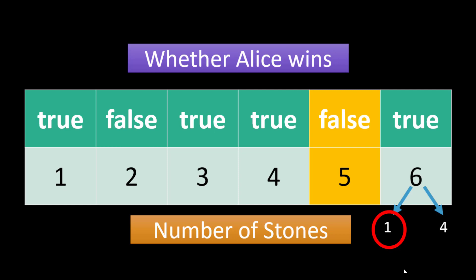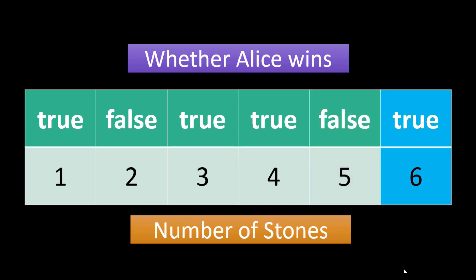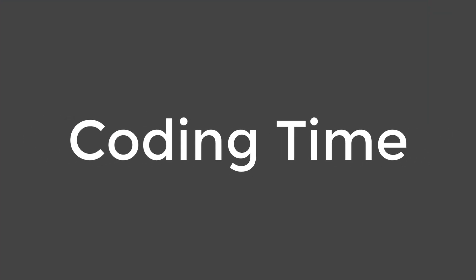Since the number of stones given to us was 6, we return the value at that particular index. In this problem, we are using the concept of dynamic programming. For any number of stones, we find all possible first moves Alice can make and then find out the answer for the remaining number of stones from Bob's side. This is all for the explanation part — try this problem on your own first, and if you have any doubts you can always come back to the video.